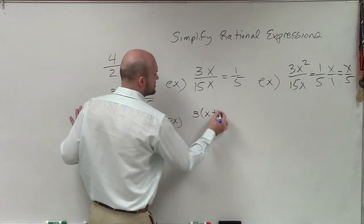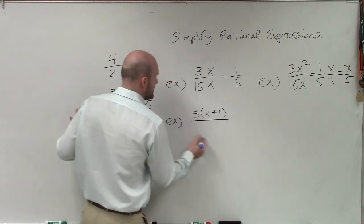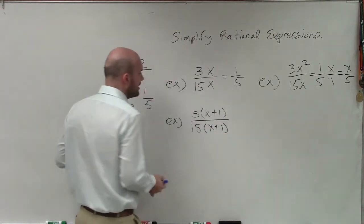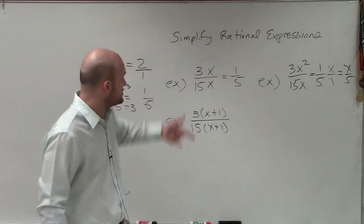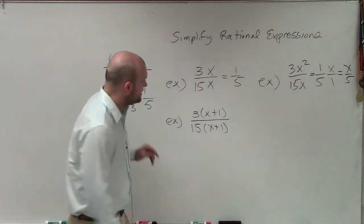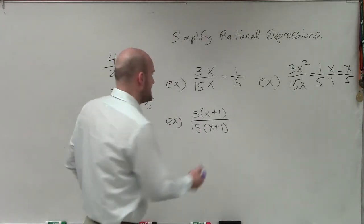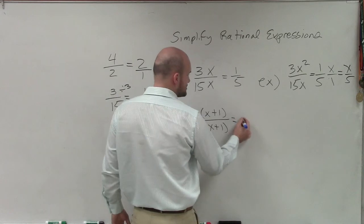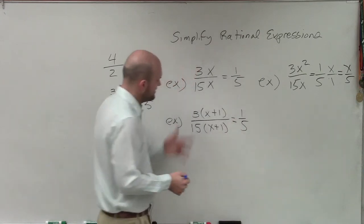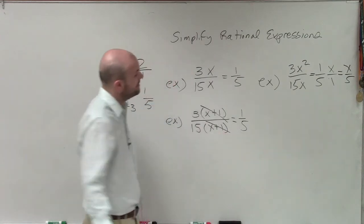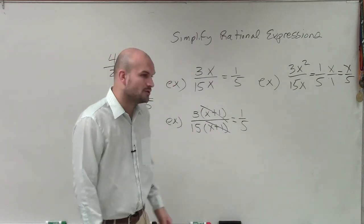We can also simplify our rational expressions if we have, let's say, 3 now times x plus 1 divided by 15 times x plus 1. All right? Now, in this case, you can see that just like how we had the x and the x, now I have an x plus 1 and an x plus 1. But since those expressions are exactly the same, I reduce my number value just like I would in all my examples. But now the x plus 1's and the x plus 1's, those divide out to 1 as well. So I'm just going to be left with the 1 fifth.